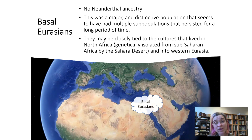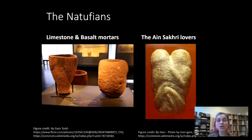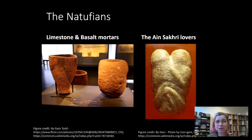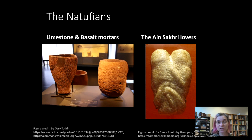We think the Basal Eurasians may have given rise over time to a group called the Natufians — a group of people who lived more recently in that Levant region of the world, between about 13,000 and 8,000 years ago. So they're much more recent than the Basal Eurasians, but there may be an ancestral-descendant relationship between the two groups. The Natufians were present at the start of plant and animal domestication.